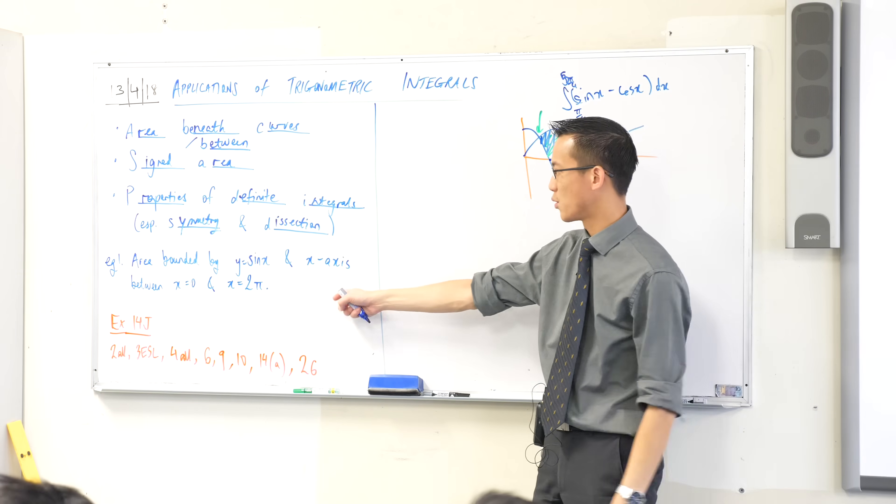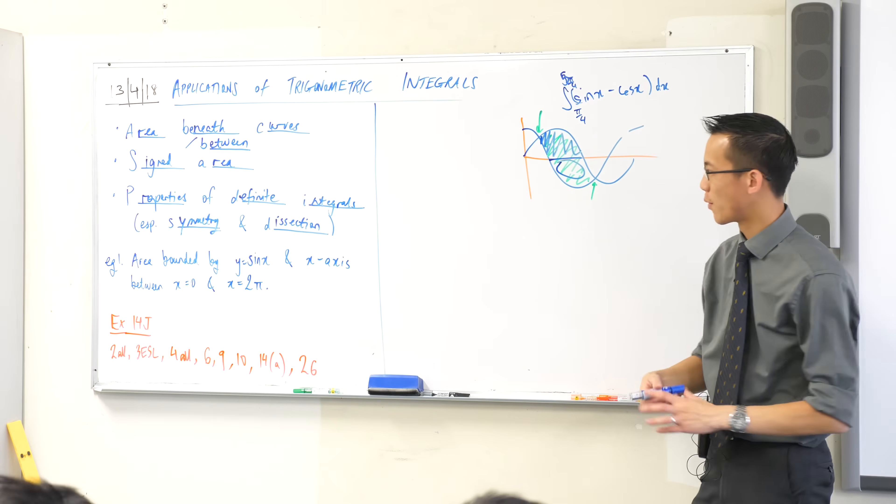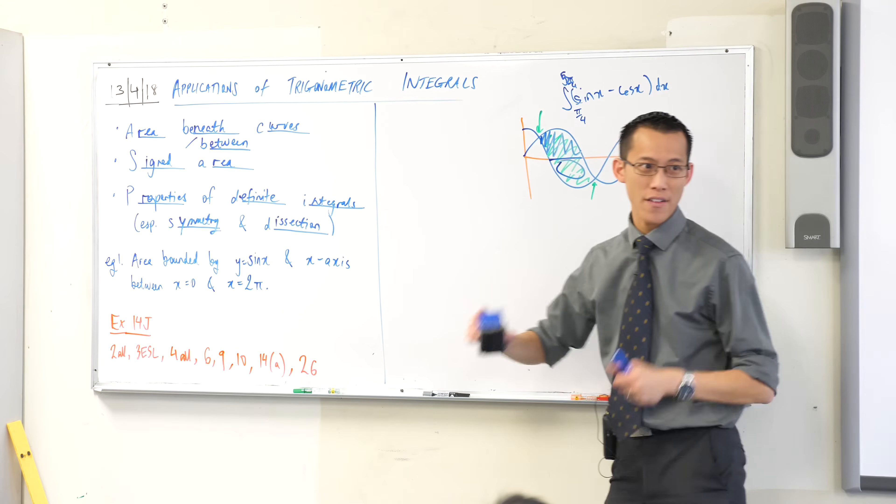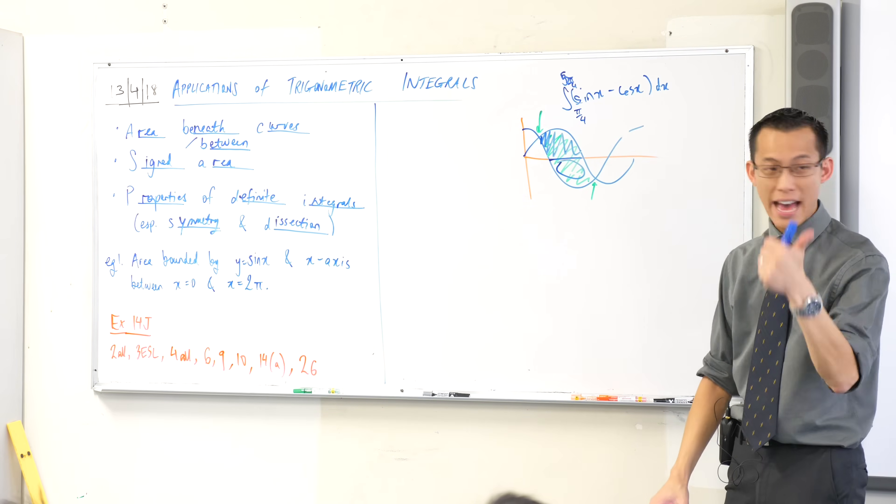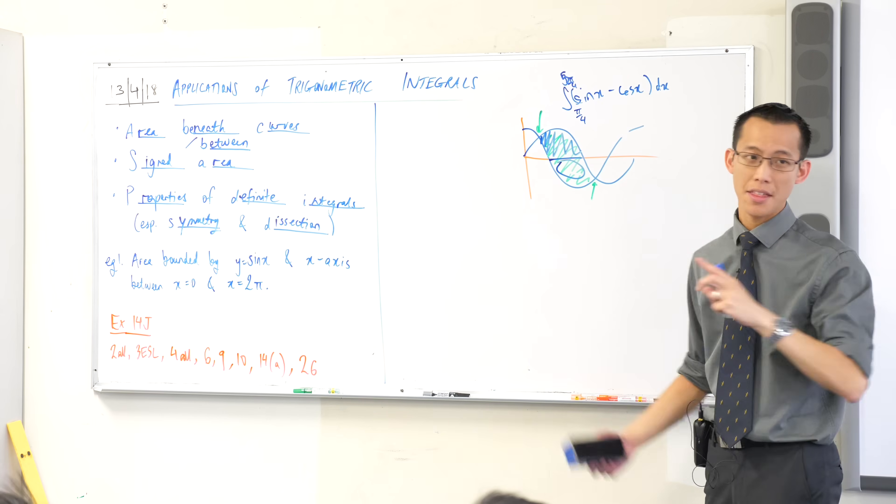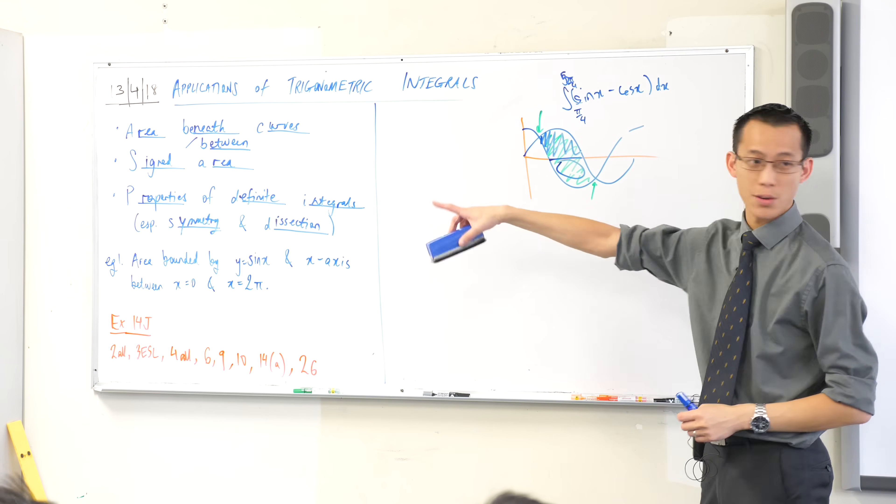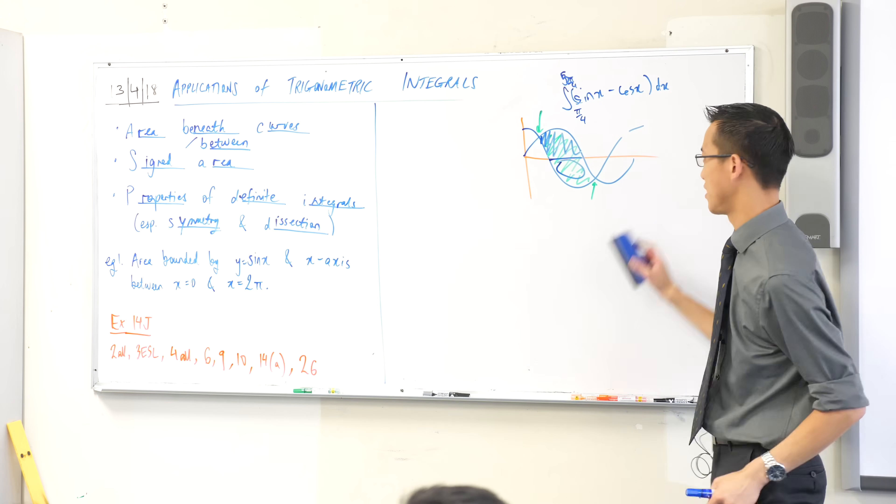So here's my first example that I want us to walk through. You can write it down if you haven't already. How do we work out the area bounded by that curve y equals sine x, the x-axis, and those are the boundaries from 0 to 2π, just the standard values.